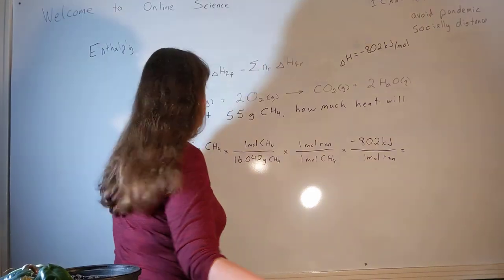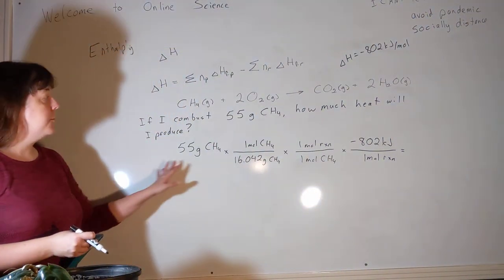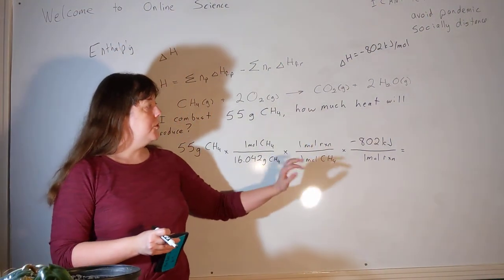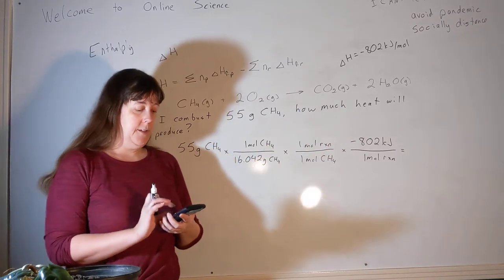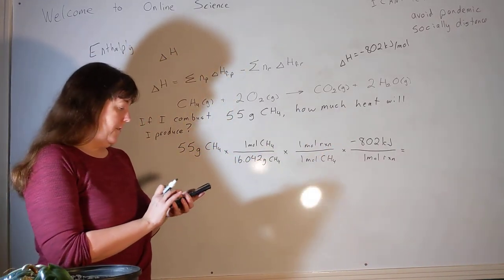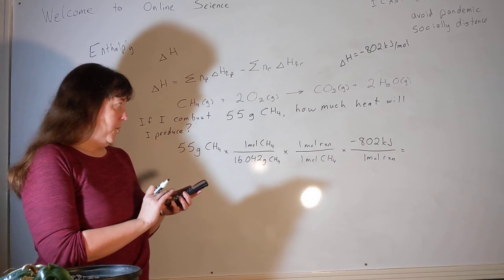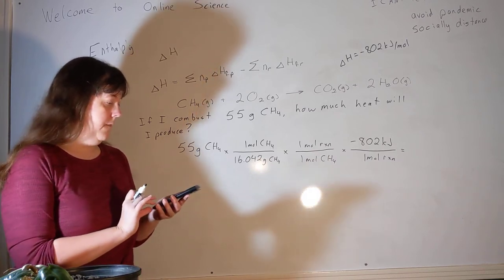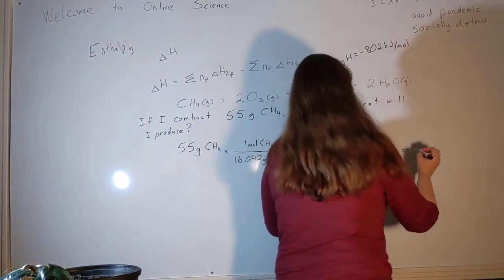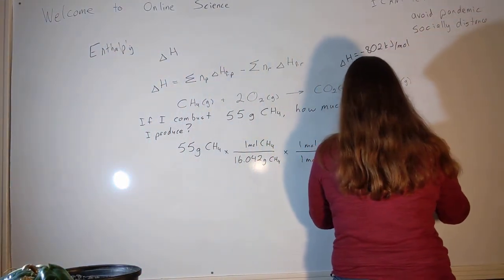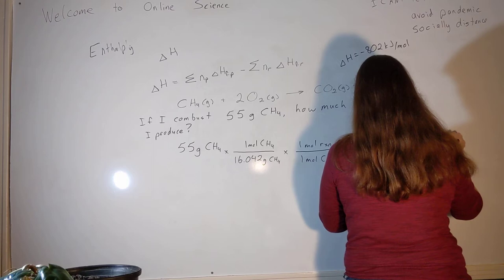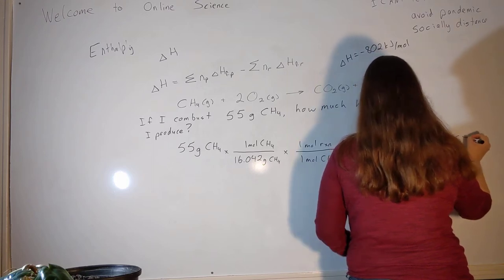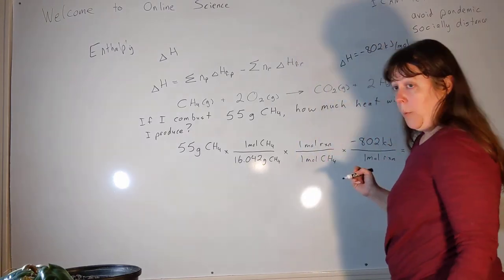So these steps should remind you of stoichiometry problem. We went from grams to moles, we went from moles to moles, and then we went from moles to whatever it was we were asked for, which in this case was heat. So 55 divided by 16.042 times negative 802 gives me minus 2749.657.